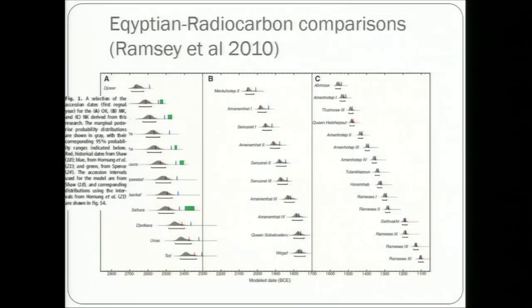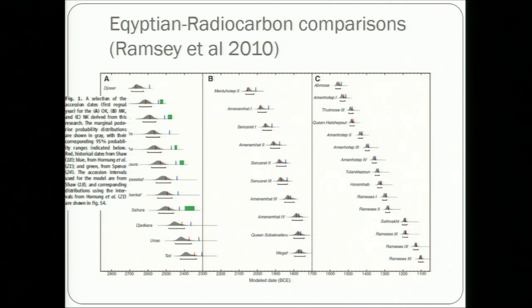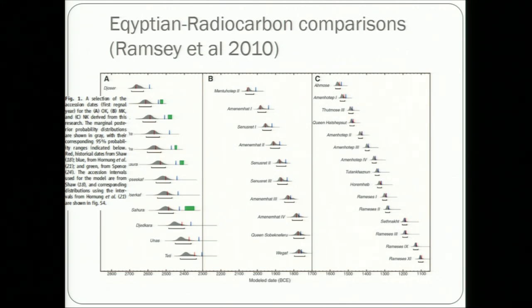Getting back to radiocarbon dating in general: there's a nice paper by Ramsey et al. where they took samples from all known tombs of Egyptian pharaohs. They were able to show that all the radiocarbon dates for the middle and new kingdom agree basically with what archaeologists told them. Whereas for the old kingdom before about 2300 BC, this is not as well the case — something happened there, perhaps part of the chronology is lost.